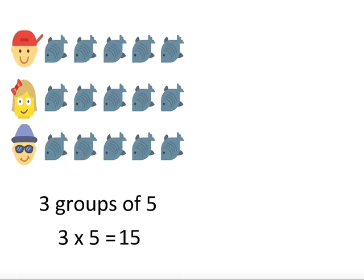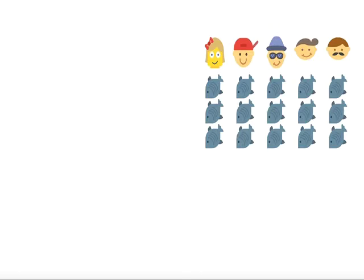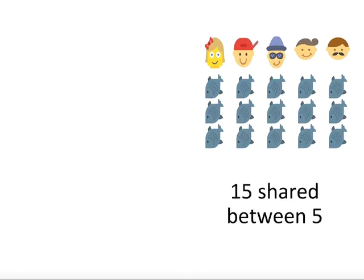Now for the next step. Say they took the fish home and shared them with two more friends. How many would they get each? This part of the problem is sharing a total, so we use division. So 15 shared between five is 15 divided by five, which, as you can see from the diagram, is three fish each.